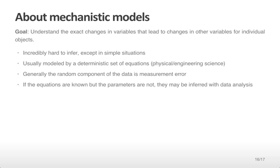The next type of statistical analysis is mechanistic models. Here, the goal is to understand the exact changes in variables that lead to changes in other variables for individual objects or people. What I mean by this is, if we change the value of a particular variable for one object, then another variable for that object will change in a very predictable way. This is incredibly hard to infer, except in very simple situations.